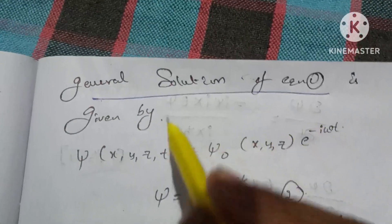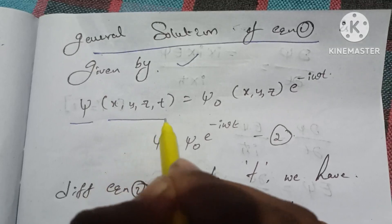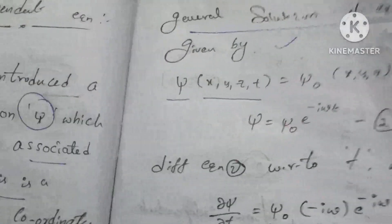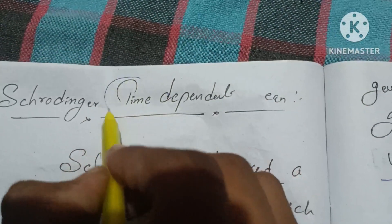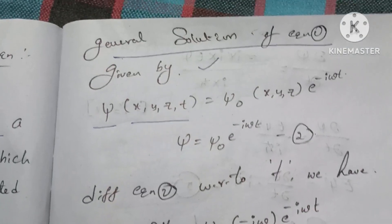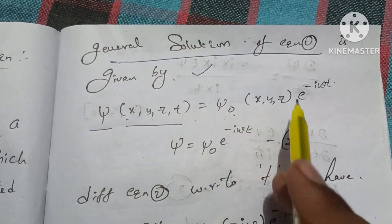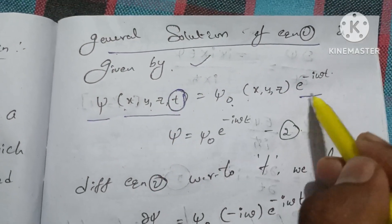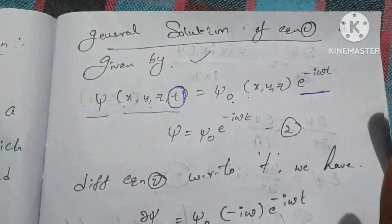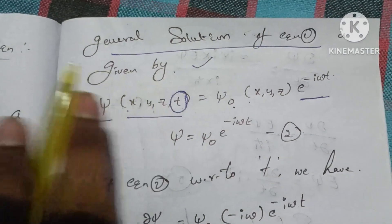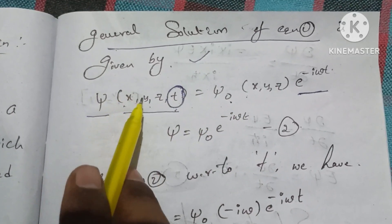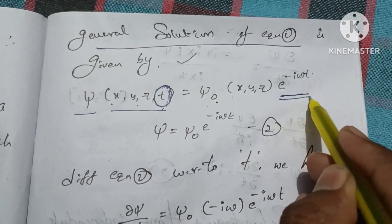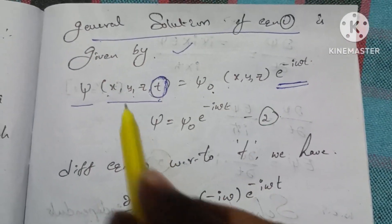The general solution of equation 1 is given by ψ(x, y, z, t), where x, y, z are the spatial components and t is the time-dependent part. So ψ(x, y, z, t) = ψ₀(x, y, z) · e^(−iωt). This is equation 2.